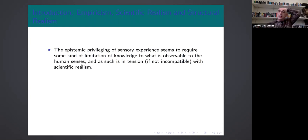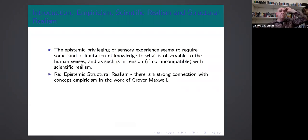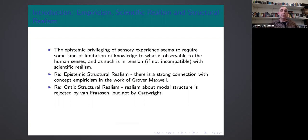So just in the background there's the idea that the epistemic privileging of sensory experience seems to require some kind of limitation of knowledge to what's observable to the human senses and as such that seems in tension if not incompatible with scientific realism. I won't have anything to say about epistemic structural realism but notice there's a strong connection between concept empiricism and epistemic structural realism. Grover Maxwell wanted to explain how theoretical terms can have meaning using Ramsey sentences by defining them in terms of observational terms much like David Lewis, but there is a strong connection here with ontic structural realism.